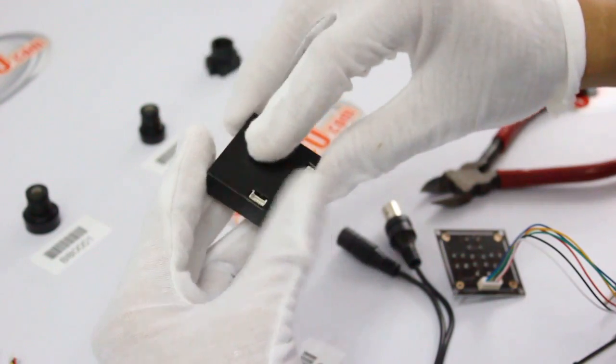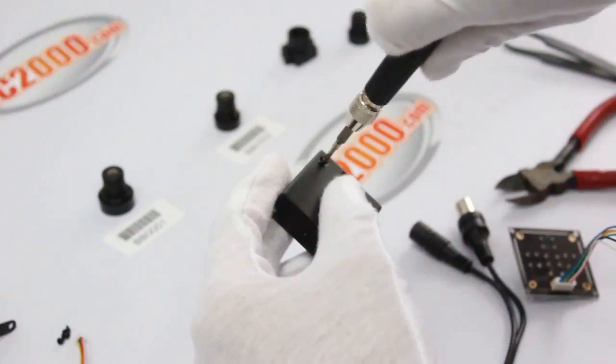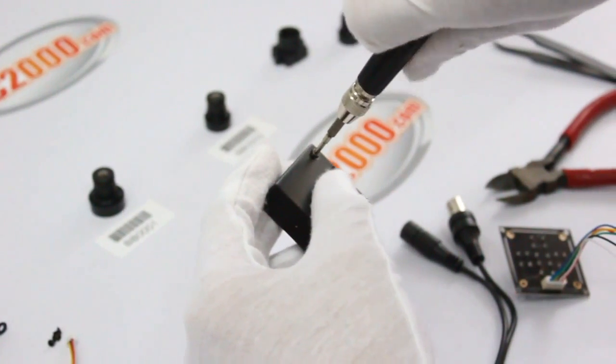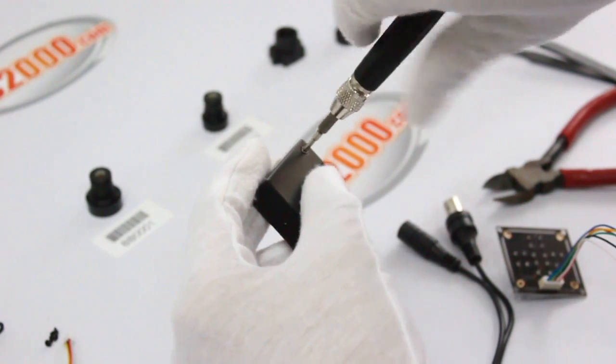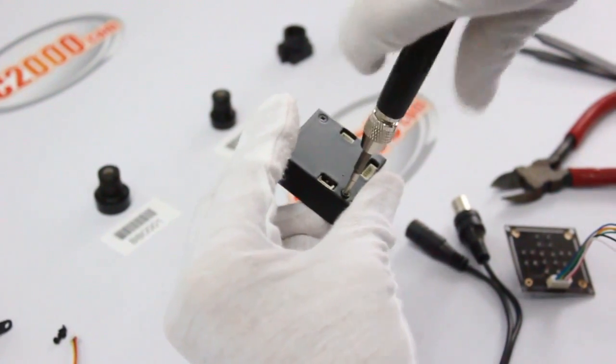Now we use two medium length screws to fasten the camera board and use two long screws to secure the back cover.